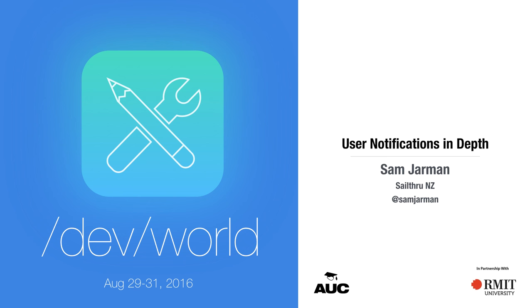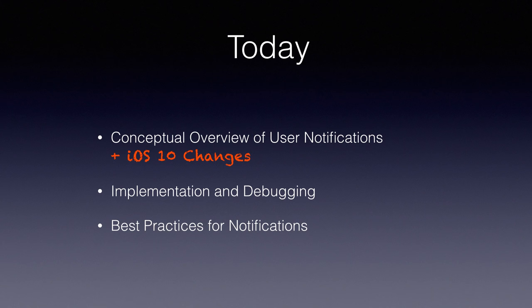As I'm about to explain, it's a little bit tricky. Today I want to cover three topics: conceptual overviews of user notifications, how to implement and debug notifications, and finally best practices for notifications. I thought of this talk before WWDC came out so I've shoehorned in the iOS 10 changes as well, of which there are a lot. I want to dive deep into some weird stuff I've discovered and hopefully add a bit more value.